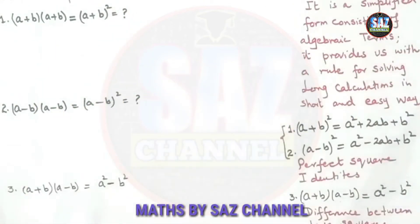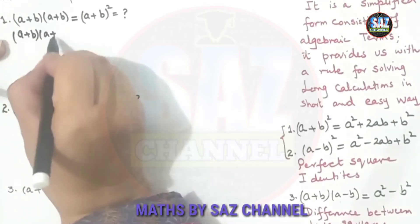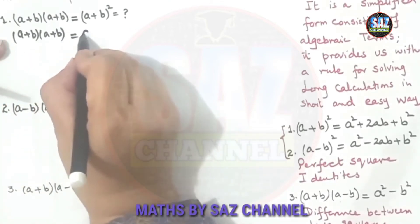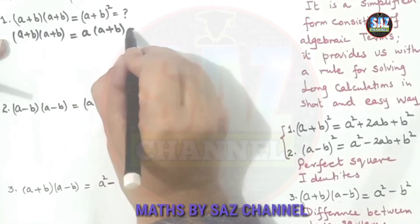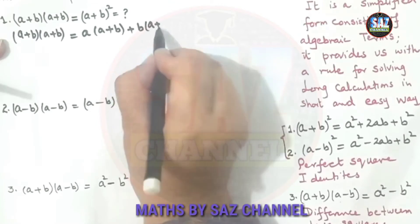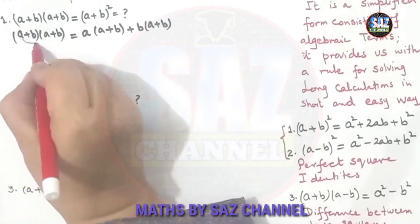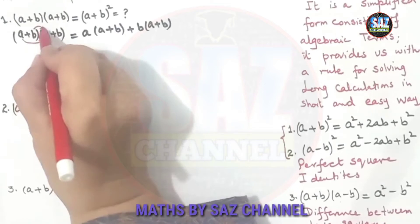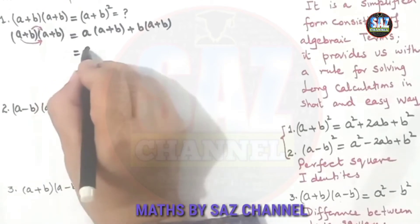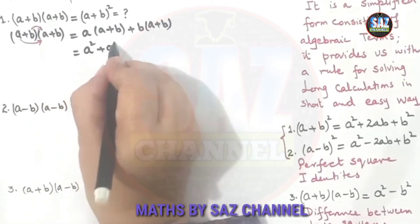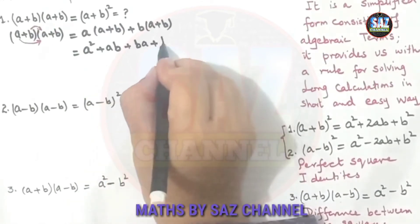We write (a + b)(a + b) and apply the distributive property — taking a and multiplying it with (a + b), then taking b and multiplying it with (a + b). When a is multiplied by a we get a², then ab, then ba, and when b is multiplied by b we get b².